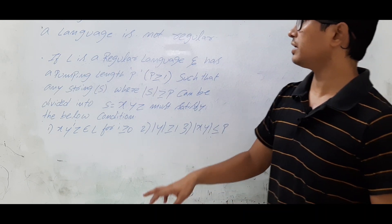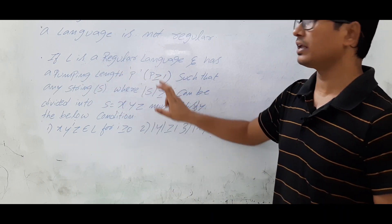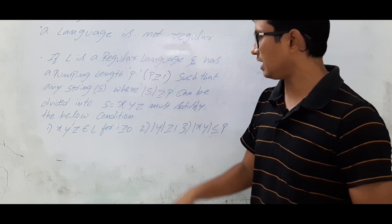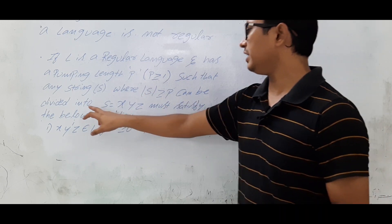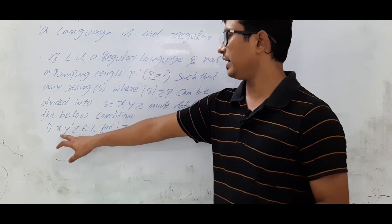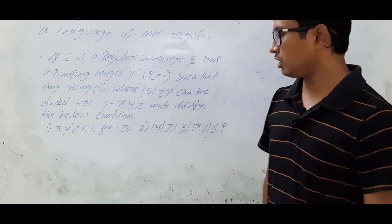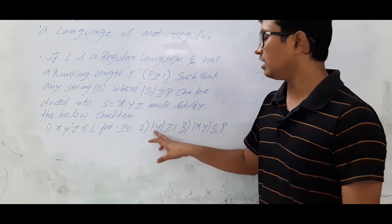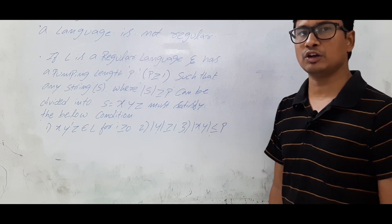If L is a regular language and has a pumping length p, where p is greater than or equal to 1, such that any string s taken from the language L where the length of s is greater than or equal to p, can be divided into xyz and must satisfy the below conditions: x y^i z belongs to language L for i greater than or equal to 0; the length of y should be greater than or equal to 1, meaning y should not be empty; and the length of xy should be less than or equal to p.